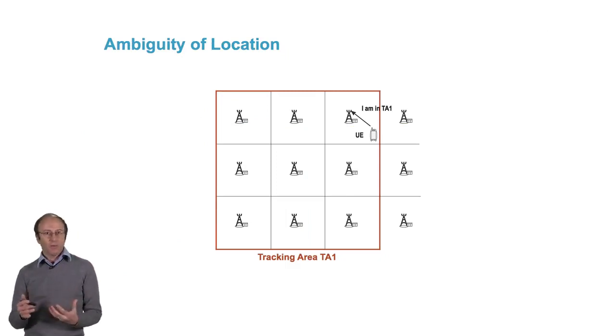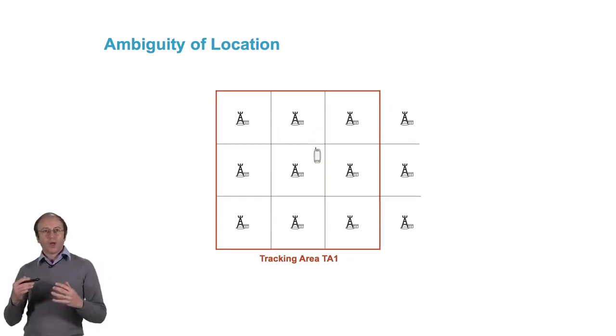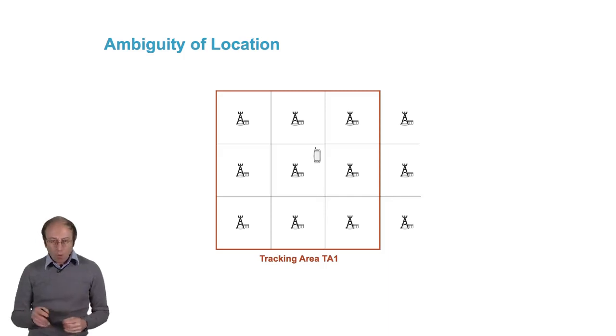You can see that now the network no longer knows in which cell the terminal is located at each time. It only knows the tracking area. That means that if there was an update at a given moment, maybe at the moment you want to reach the terminal, it's in a different cell.